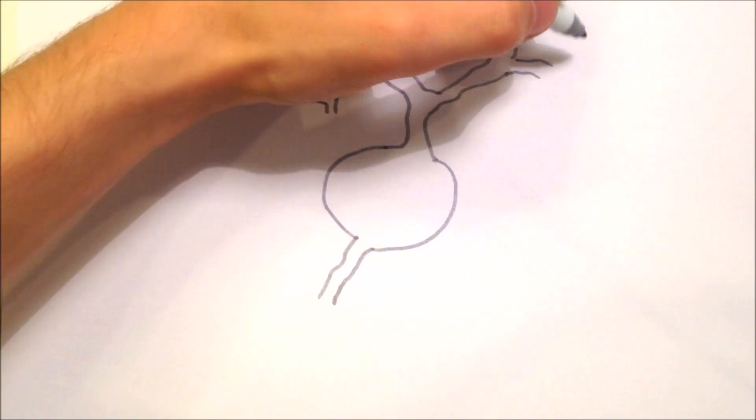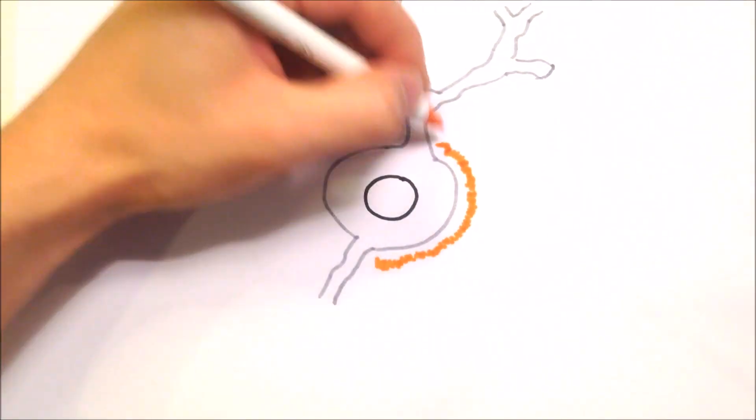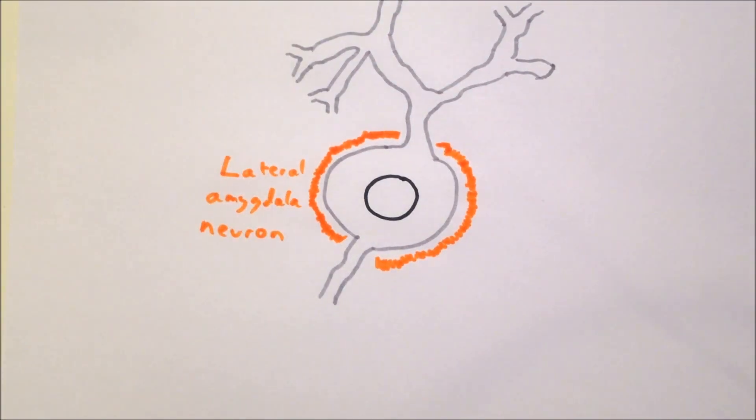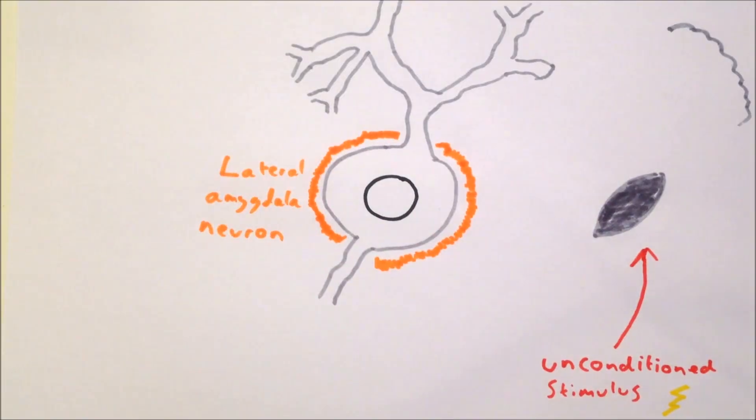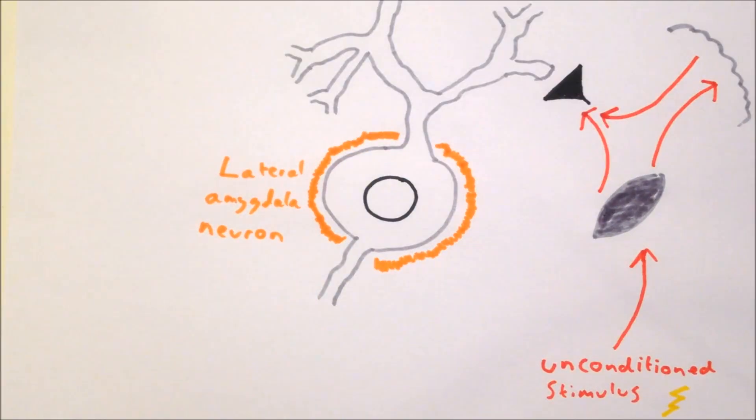The amygdala is thought to be the primary area of the brain responsible for fear conditioning, and the classic model of how it does this is as follows. The unconditioned stimulus of the foot shock travels through the spinal cord to the thalamus and the cortex, which then both project to the lateral nucleus of the amygdala.